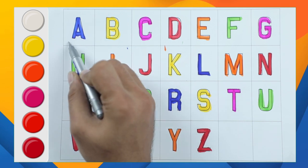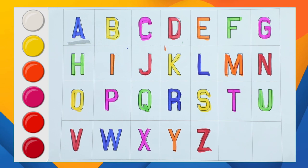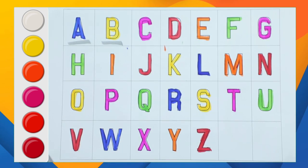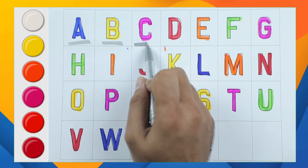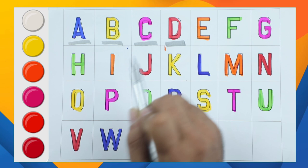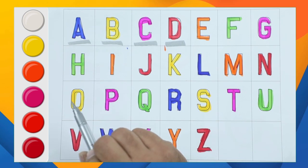It's A, capital A. B, B, B with yellow color. C, pink color C. Red color D, D for dog.